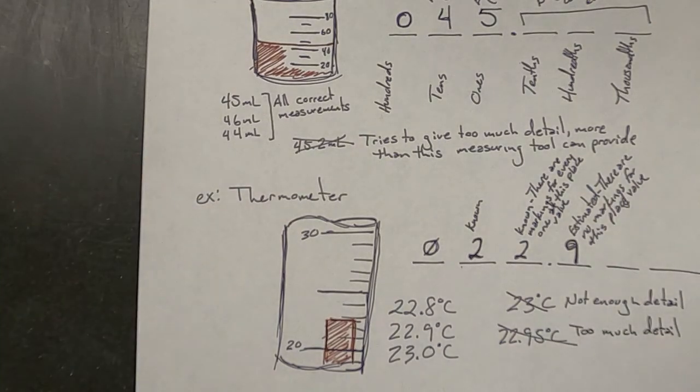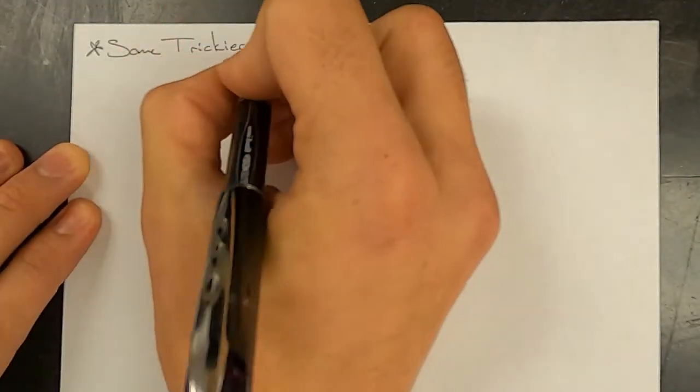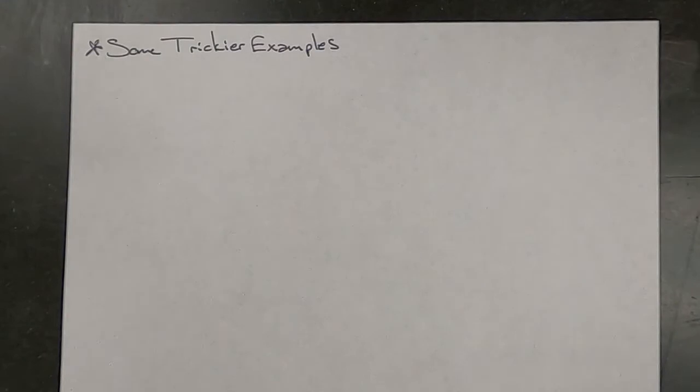Now those were relatively easy examples. We're going to look at some more difficult ones right now. Now the trickier examples are tricky because the lines that are on these measuring tools don't represent one at a specific place value.